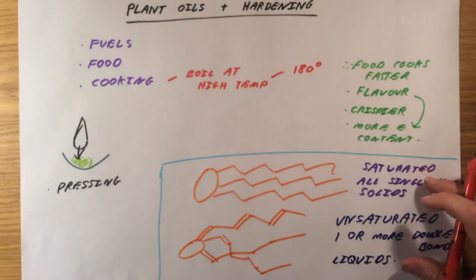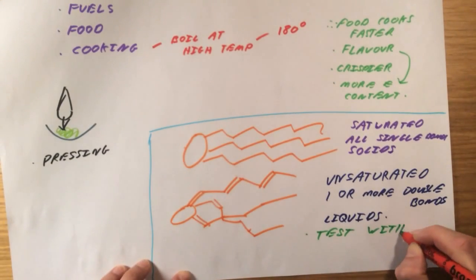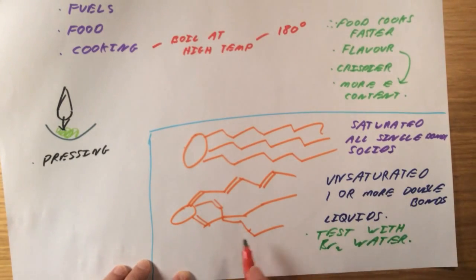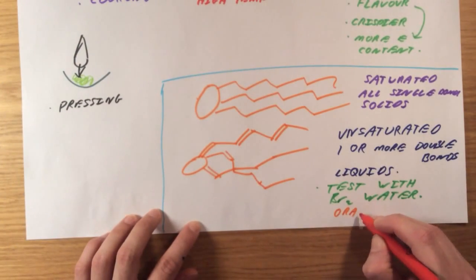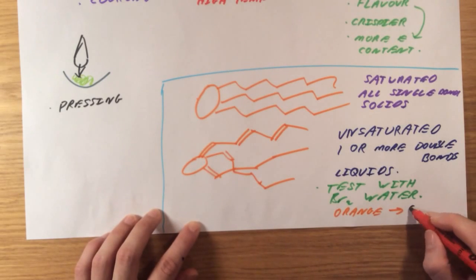And it's actually very easy to do a chemical test to prove that a fat is unsaturated. It's the same as a test for an alkene. You just test it with bromine water. If it is an unsaturated fat, the bromine water will go from orange to colourless.